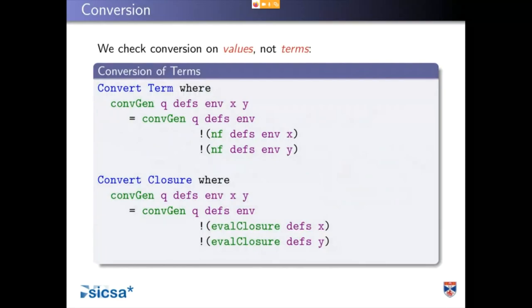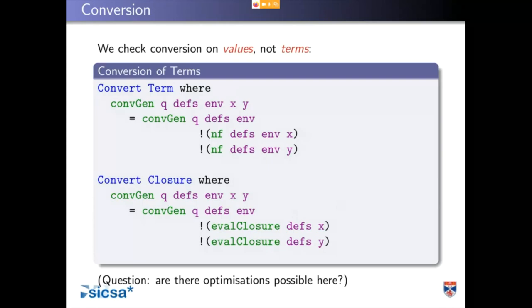When we check conversion, we're checking on values, not terms. The conversion rule for terms is to turn them into a normal form. The conversion rule for closures is to evaluate the closure enough that we can start doing conversion checking. There may be optimizations possible here — for example, we can convert some terms without doing normalization first, or maybe the terms are in some form where we can do a fast approximate check. There are definitely optimization opportunities here if you start looking.